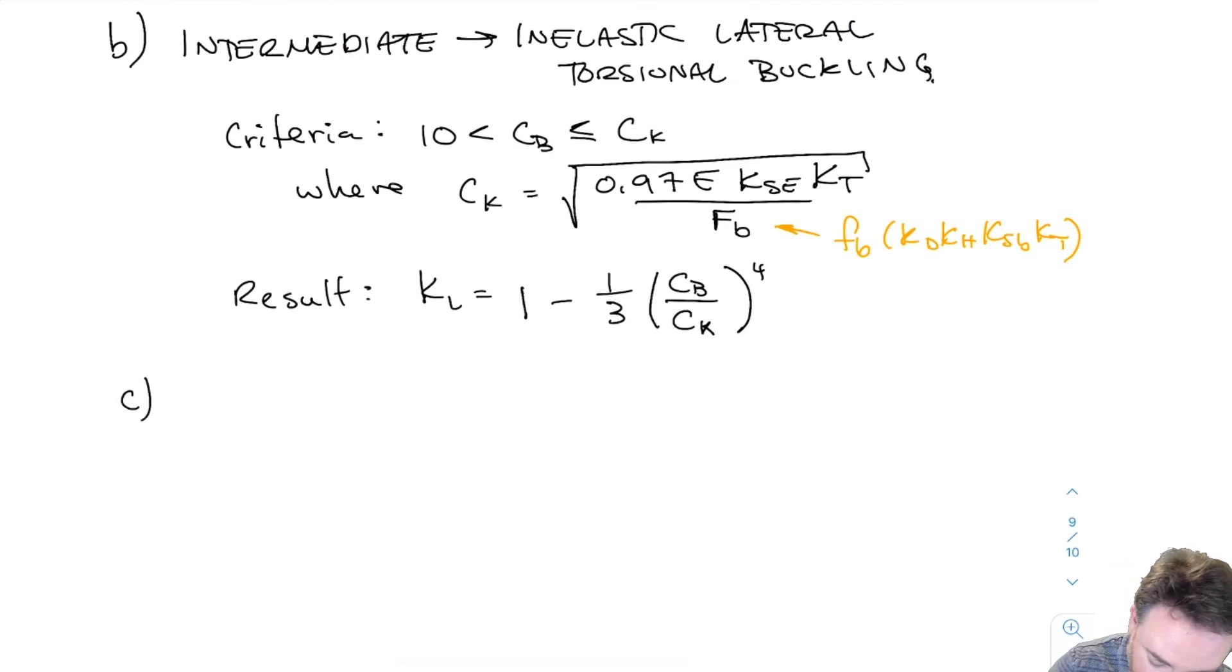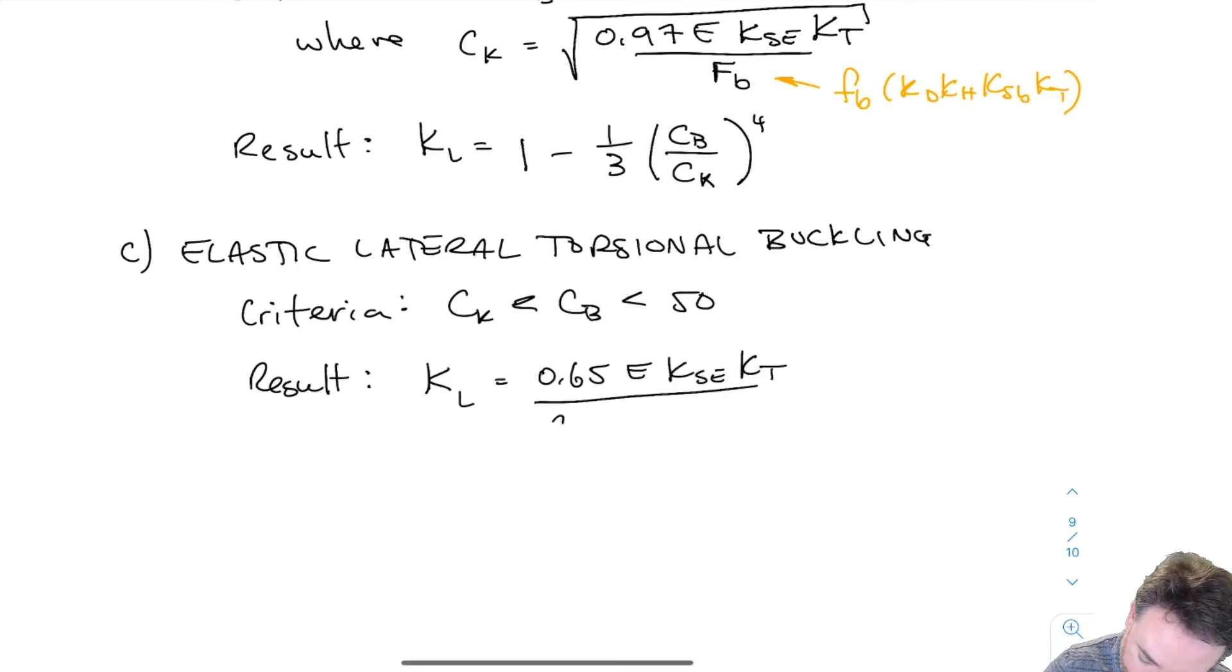The last category is totally elastic lateral torsional buckling. This is the regime between CK, which is the borderline between inelastic and elastic lateral torsional buckling, and 50, which is a limit on slenderness for beams.